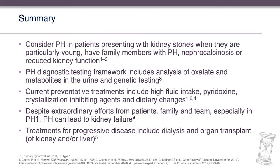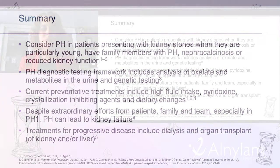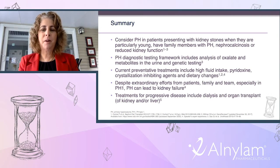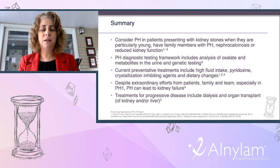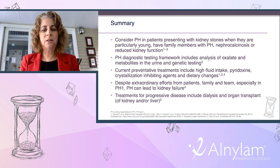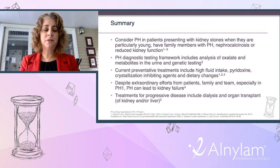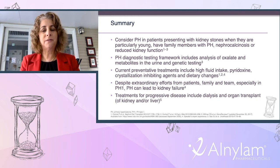In summary, primary hyperoxaluria should be considered in patients presenting with kidney stones at a very young age, with family members who might have primary hyperoxaluria, with nephrocalcinosis, or with reduced kidney function in the setting of kidney stones. The diagnostic framework includes analysis of oxalate and its metabolites in the urine, as well as genetic testing. Current preventative treatments include high fluid intake, pyridoxine, crystallization-inhibiting agents, and minimal dietary changes. Despite extraordinary efforts, especially in type 1, primary hyperoxaluria can lead to kidney failure requiring aggressive dialysis and organ transplantation.